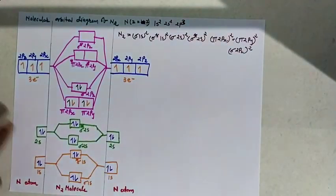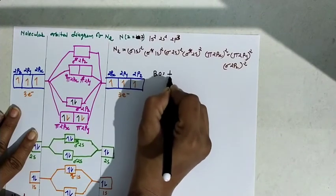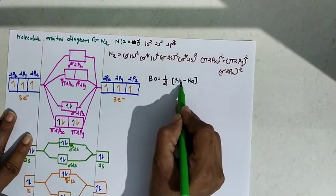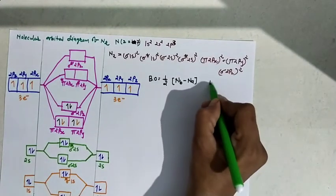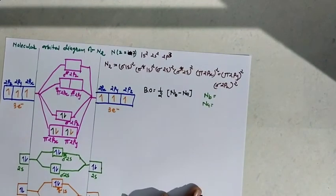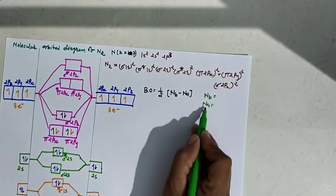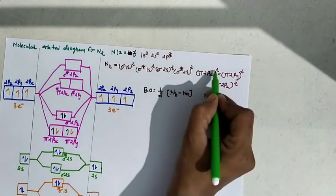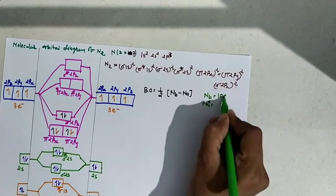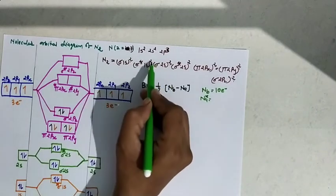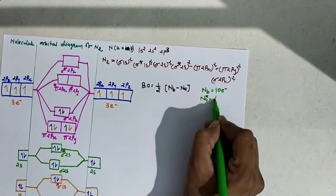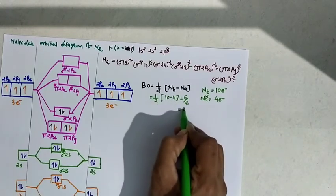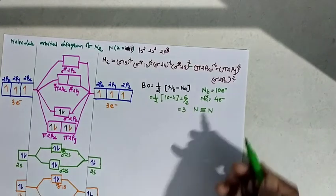Now, we have to find bond order. And what is the bond order formula? One half Nb minus Na. So, what is Nb? Nb means number of electrons in bonding pair, and Na number of electrons in anti-bonding pair. Now, we have to calculate bonding pair: 1, 2, 3, 4, 5, 6, 7, 8, 9, 10. In bonding pair, it has 10 electrons. Anti-bonding pair, the star ones, calculate: 1, 2, 3, 4. It has 4 electrons. So, 1 half, 10 minus 4, 6 by 2, equal to 3. So, nitrogen has a triple bond.